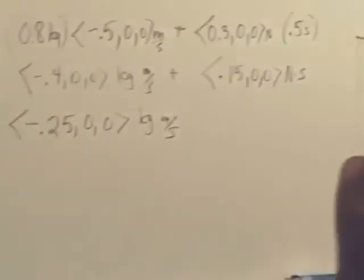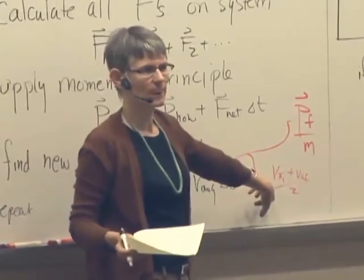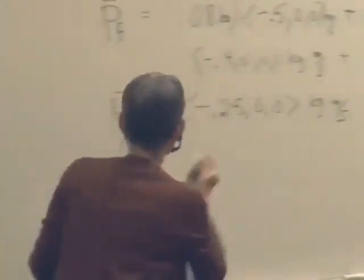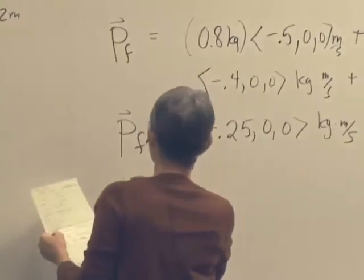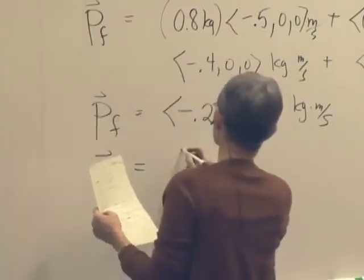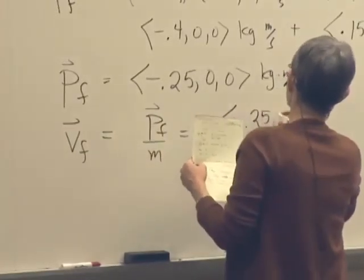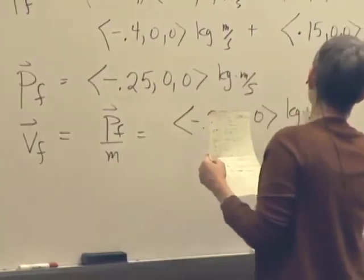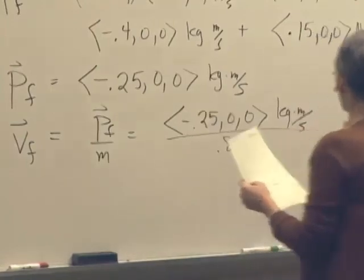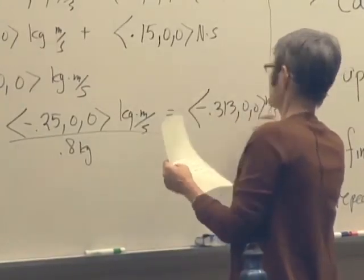Well, since this was a constant force, we could actually take V initial plus V final over 2 and get an average velocity. And that would be, in this case, a better thing to do. But we're going to do it in a slightly less accurate way. We'll say the final, we can calculate the final velocity. That's just the final momentum over the mass. So that's negative 0.2500 kilogram meters per second divided by 0.8 kilograms or a negative 0.3130 meters per second.